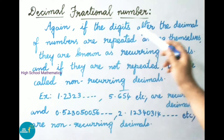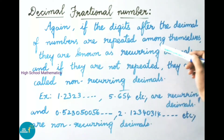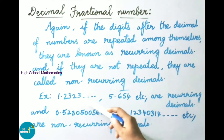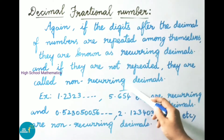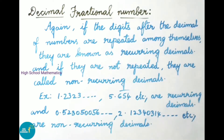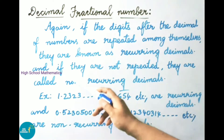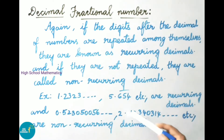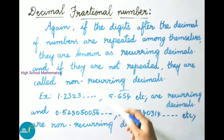If the digits after the decimal are repeated among themselves, they are known as recurring decimals. Examples: 1.2323... and 5.654 bar are recurring decimals. If the digits are not repeated, they are called as non-recurring decimals. Examples: 0.523050056... and 2.12340314... are non-recurring decimals. Recurring means the same digits are repeated; non-recurring means the digits are not repeated.